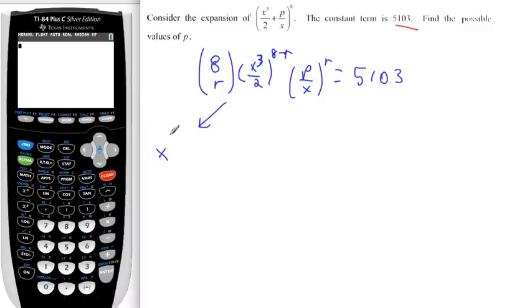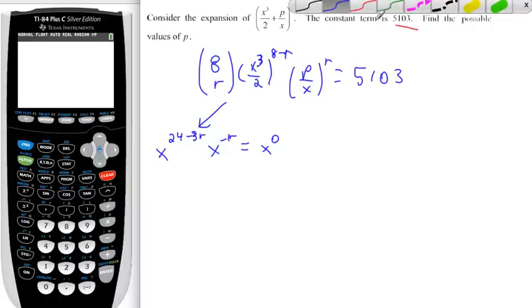We'll do a little bit of side working. So 24 minus 3r times x to the minus r has got to be x to the 0. Let's talk that through a bit. When we do a power to a power, these multiply. And here, x to the r, if you bring this x to the r here up, it becomes x to the minus r.